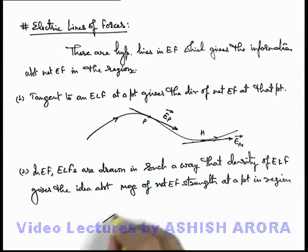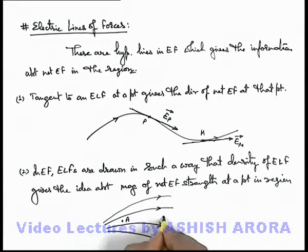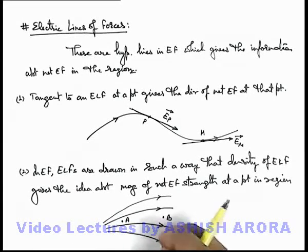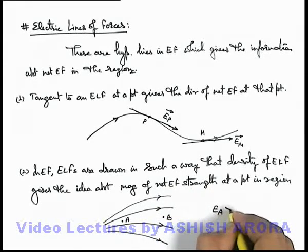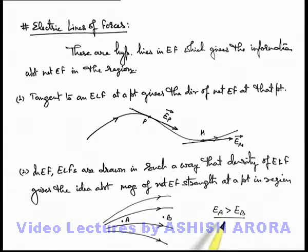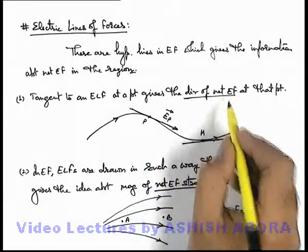Say in a region, electric lines are drawn like this. In the region there are two points, A and B. We can see that at point A the electric lines are more dense, and at point B they are rarer, or less dense. So we can say that the electric field at point A is more than the electric field at point B. This qualitative idea about electric field can be assessed by just looking at the density of electric lines in the region. Be careful that whatever information these electric lines give us is about the net electric field — both the magnitude and the direction of the net field of the system.